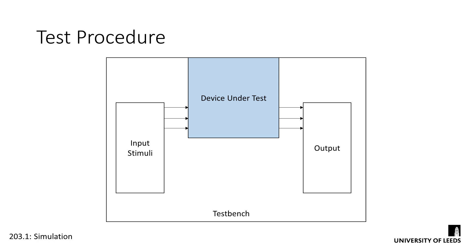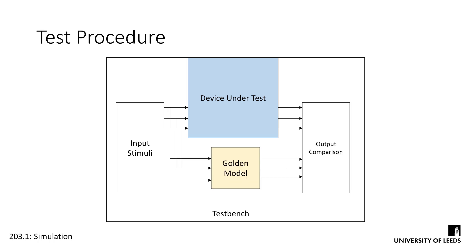This leads to the idea of developing a so-called golden model for the device under test. Golden models can be developed in any programming language and act as a simulator for an ideal working version of your design. Using some clever scripting, the test bench can pass the input stimuli to both the device under test and the golden model, and then compare the output of the two, automatically throwing up any cases which don't match.